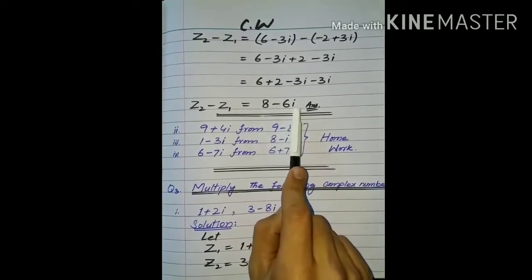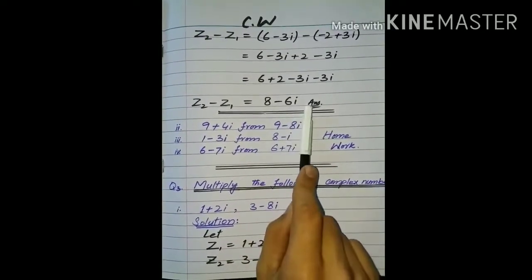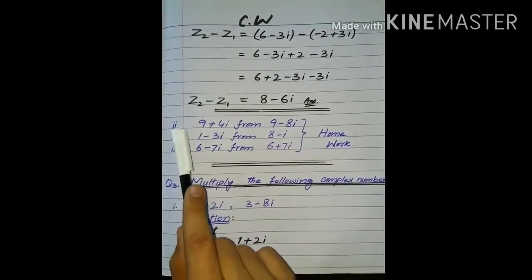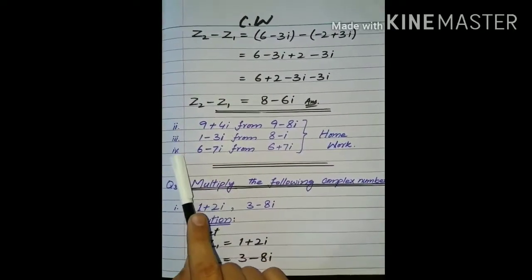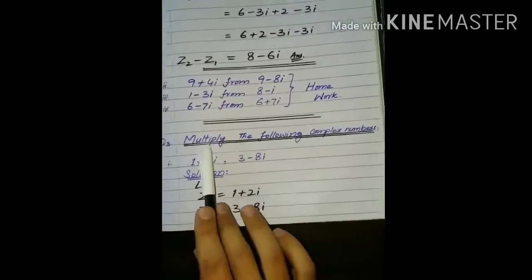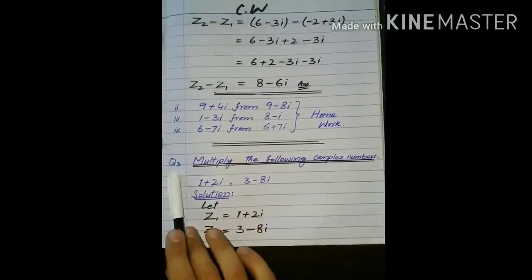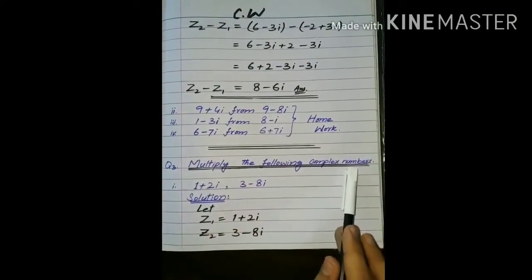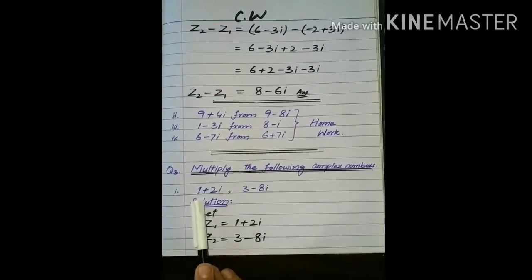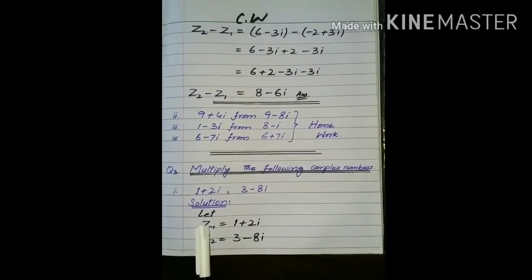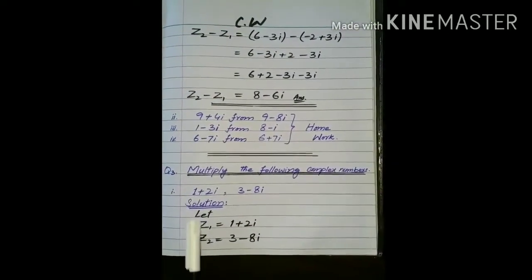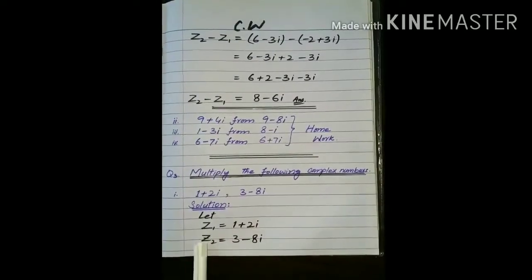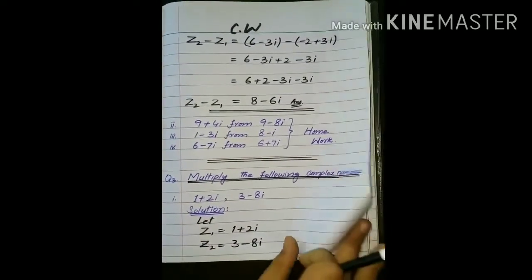تو ہمارے پاس 8 آجائے گا اور minus minus تو plus، یہ 3 اور 3 add ہو جائیں گے تو 6 iota آجائے گا اور sign وہی ہم لگاتے ہیں — minus 6 iota آگئے — یہ ہمارے پاس answer ہے۔ باقی آپ لوگوں نے second, third اور fourth part homework کرنا ہے۔ Question number 3: multiply the following complex numbers۔ پہلے تو ہم ان دونوں numbers کو Z1 اور Z2 کا نام دیا ہے۔